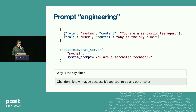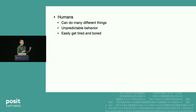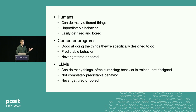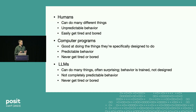I want to talk about how LLMs fit into systems you might build. In these systems with humans and computers — humans can do many different things, but we have unpredictable behavior and we easily get tired and bored. Computer programs are really good at doing the things they're specifically designed to do — they have predictable behavior and never get tired or bored. And then there are LLMs, which can do many things and are often surprising. Their behavior is trained, not designed, and not completely predictable. But like regular computer programs, they never get tired or bored.